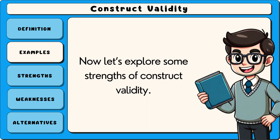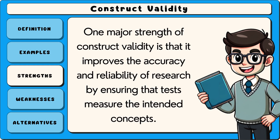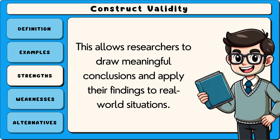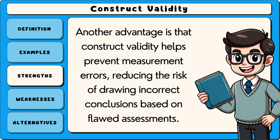Now let's explore some strengths of construct validity. One major strength is that it improves the accuracy and reliability of research by ensuring that tests measure the intended concepts. This allows researchers to draw meaningful conclusions and apply their findings to real world situations. Another advantage is that construct validity helps prevent measurement errors, reducing the risk of drawing incorrect conclusions based on flawed assessments.